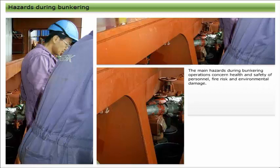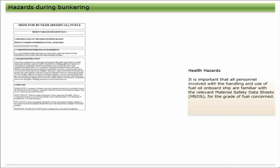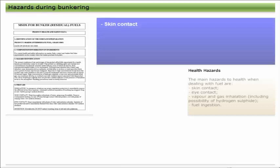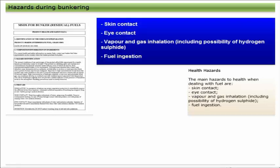You should always familiarize yourself with any procedures for all operations you are involved with on your ship before starting those operations. The main hazards during bunkering operations concern health and safety of personnel, fire risk, and environmental damage. It is important that all personnel involved with the handling and use of fuel oil on board ship are familiar with the relevant material safety data sheets for the fuel concerned, which give detailed information on hazards, health information, and recommended treatment of victims. The main hazards to health when dealing with fuel are skin contact, eye contact, vapor and gas inhalation including the possibility of hydrogen sulfide, and fuel ingestion.